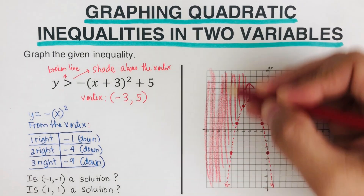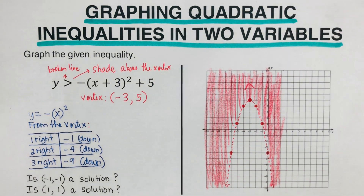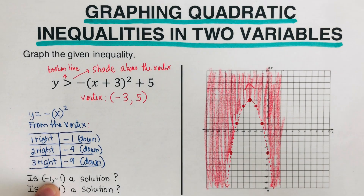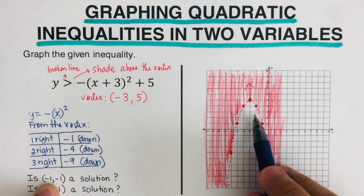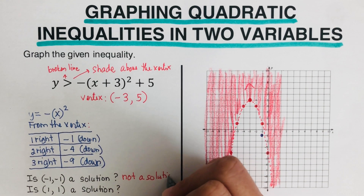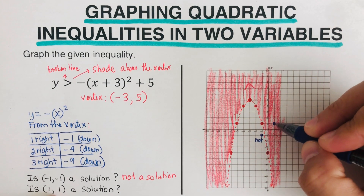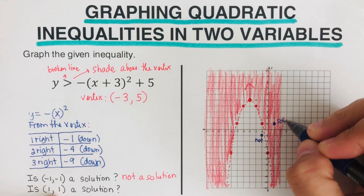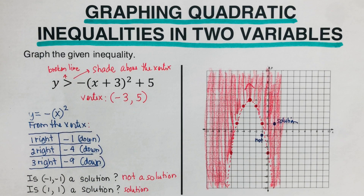Anything above the vertex is the solution to this inequality. For example, is (−1, −1) a solution? It falls on the unshaded part, so it is not a solution. What about (1, 1)? That point is on the shaded part, so it is a solution.